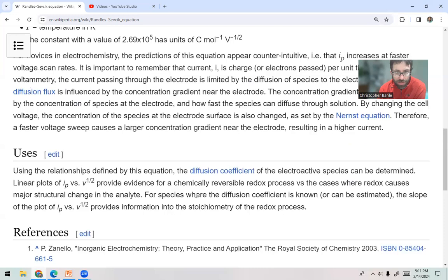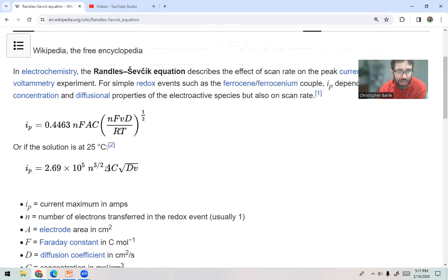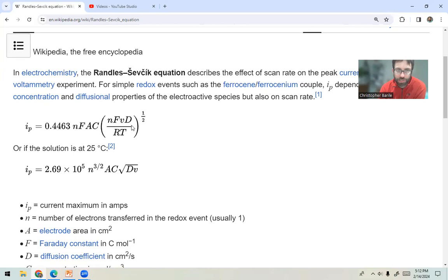Even more importantly, though, what you can do is you can figure out N, which is nice, number of electrons transferred. If you don't know what that is, but you know all the other things, there's other ways to determine the diffusion coefficient, for example. Concentration, you usually know because you're adding it in.